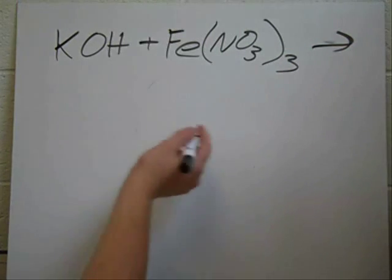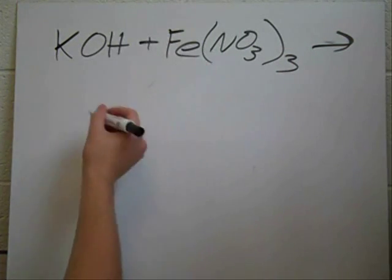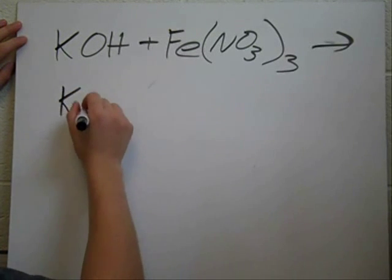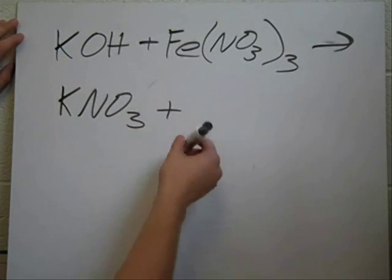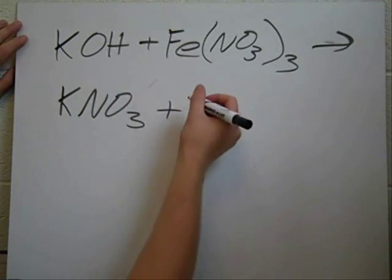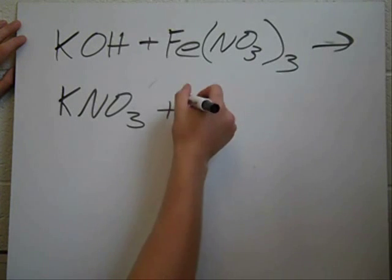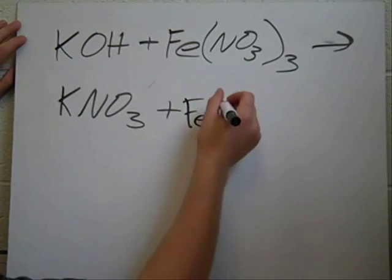You do the double switch. Potassium is going to go with nitrate, and iron is going to go with hydroxide. Now, iron has a +3 charge here, so you're going to need three hydroxides on that one.